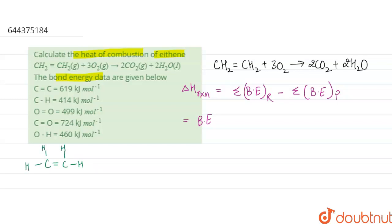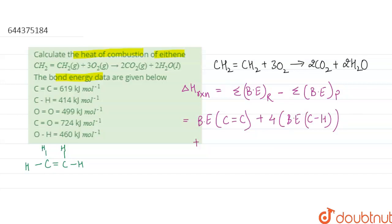There are four carbon-hydrogen bonds and one carbon-carbon double bond. So we write: bond energy of C=C (carbon-carbon double bond), plus 4 times the bond energy of C-H, plus 3 times the bond energy of O=O (oxygen double bond oxygen).